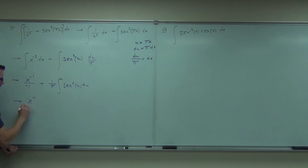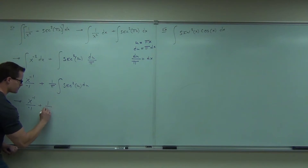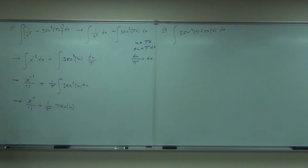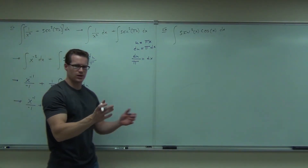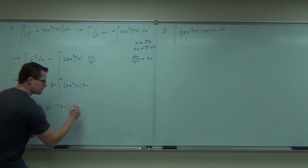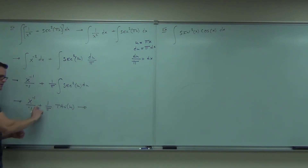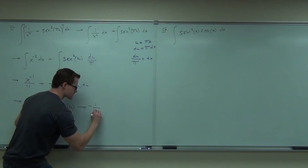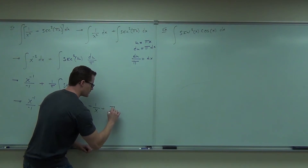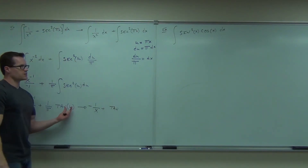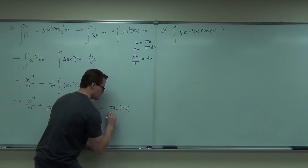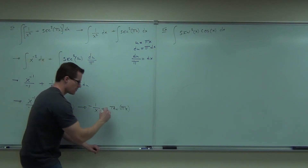We already talked about this — it becomes tangent u, and you only need one plus C at the very end of the problem. We'll make things a little prettier: drop down the negative exponent, so this will be negative one over x, plus tangent of u. And u is listed right up here; we just put it back in its place. You can have one over pi, or the whole thing over pi — either way.